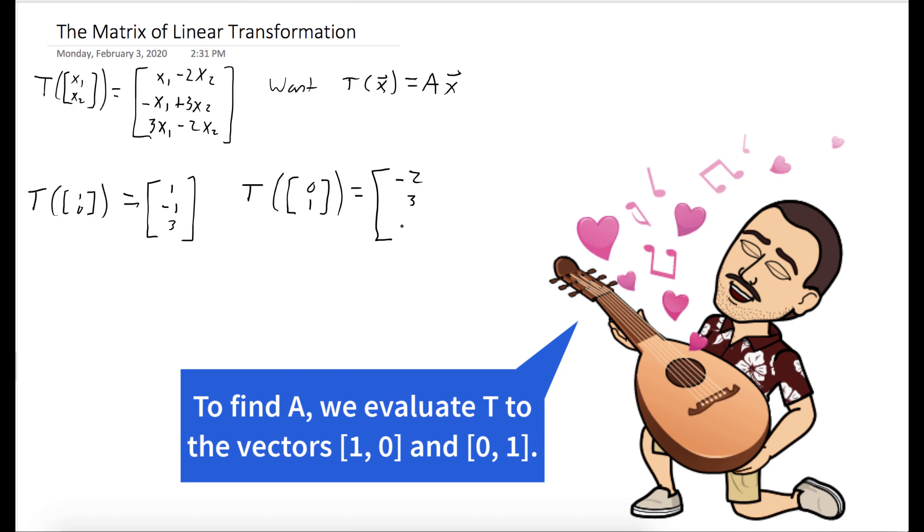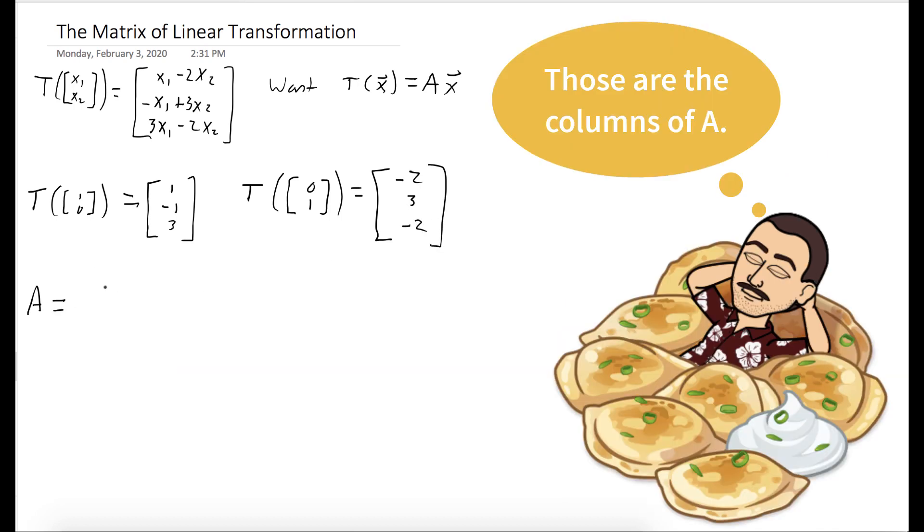Okay, so we found both columns of A. Now what we want to do is solve the non-homogeneous system AX equals minus 1, 4, 9.